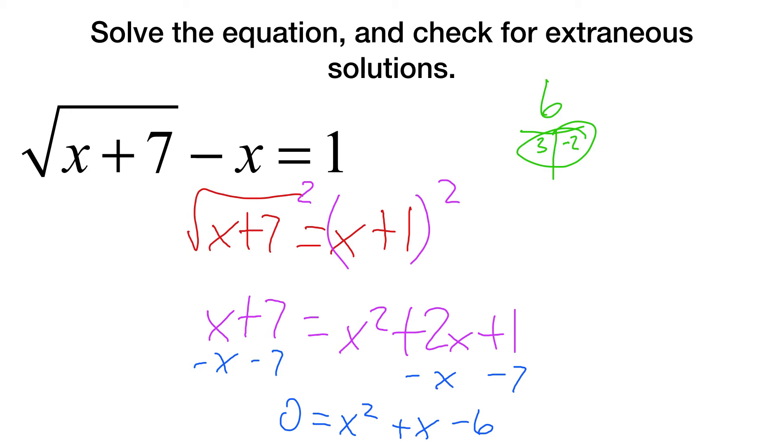So two numbers that multiply to be 6 have a difference of 1 are 3 and, in this case, negative 2. 3 and negative 2 ends up getting us 0 equals x plus 3, x minus 2. Meaning x could equal negative 3 or 2.